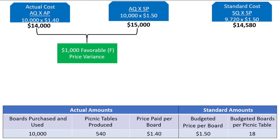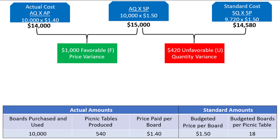We are trying to calculate the quantity variance now, meaning we must hold the price constant. Both values multiply by the standard price, keeping price constant, but the quantity changes from actual to standard. That means the difference between these two values is the direct materials quantity variance, which comes to $420 unfavorable. Why unfavorable? Because the company used 10,000 boards when the budget suggests that only 9,720 boards should have been used.